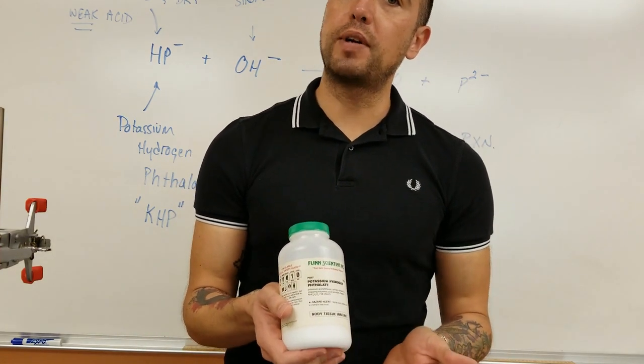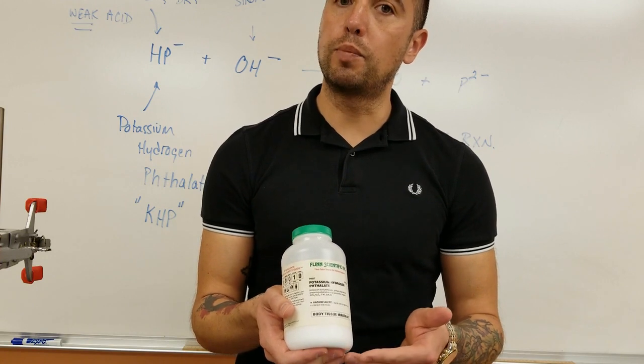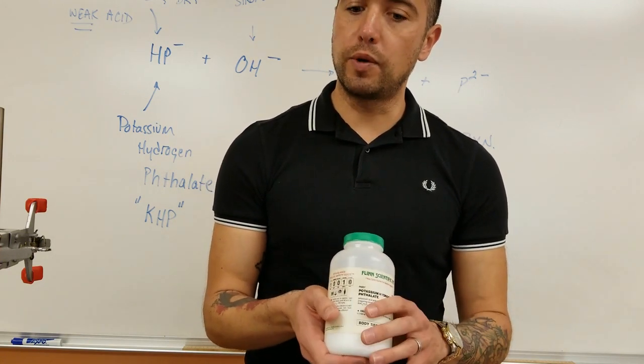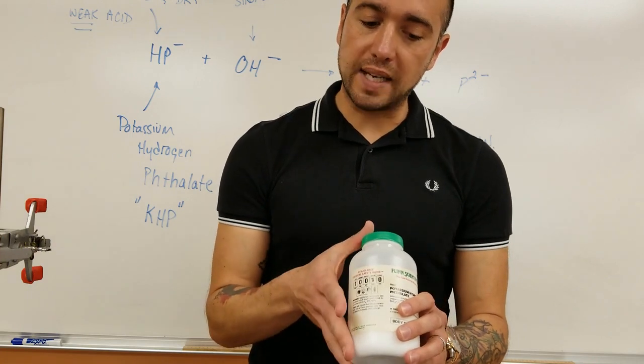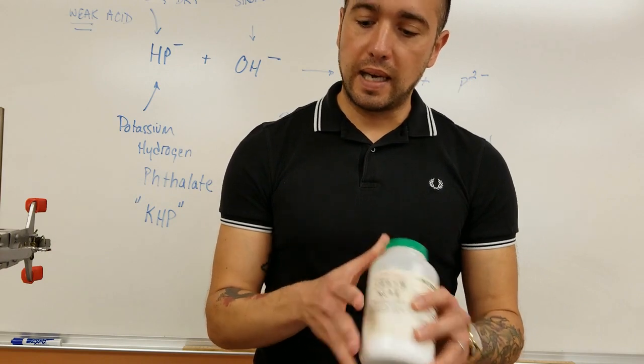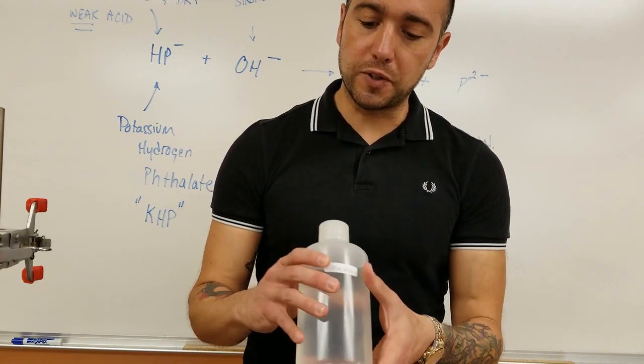Because the powdered acid we can measure out on the balance with more precision, and then we're going to dissolve that in some water. We're going to see how many moles of acid are in here. We can calculate that based on the mass, and that will tell us how many moles of base have reacted.